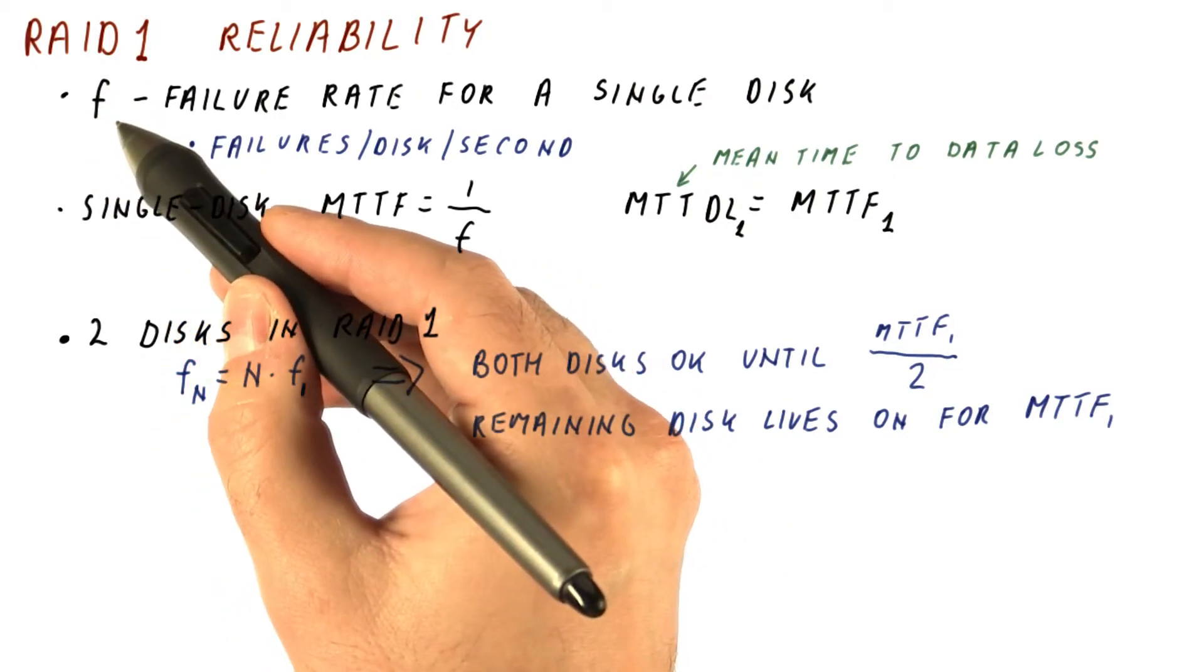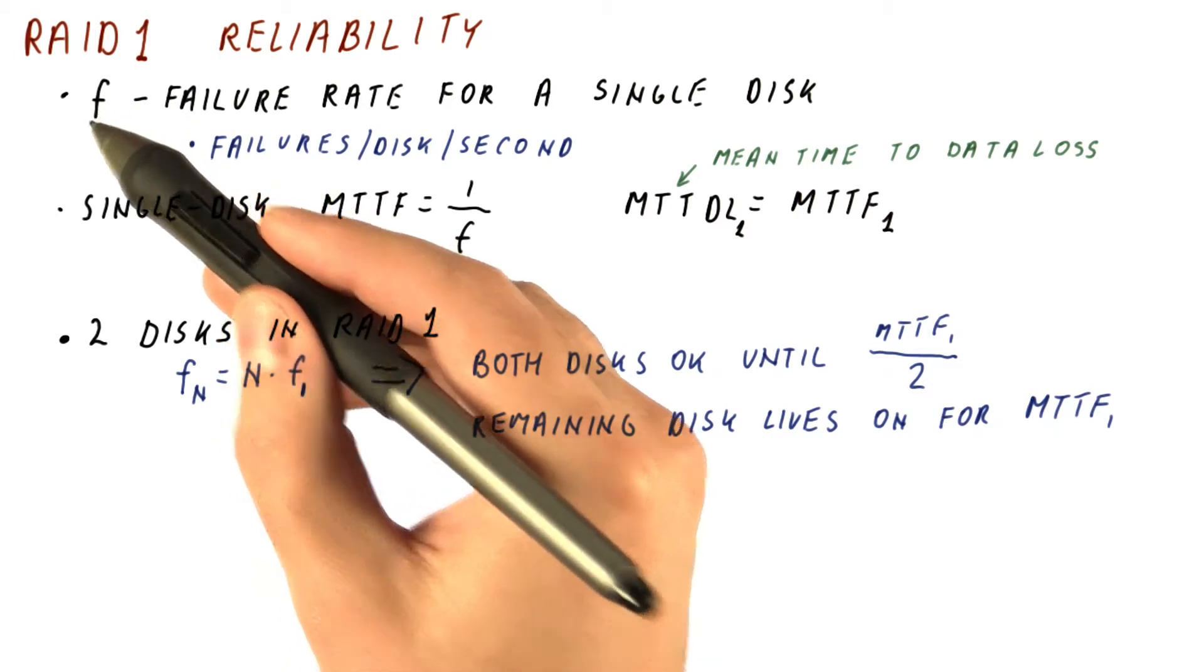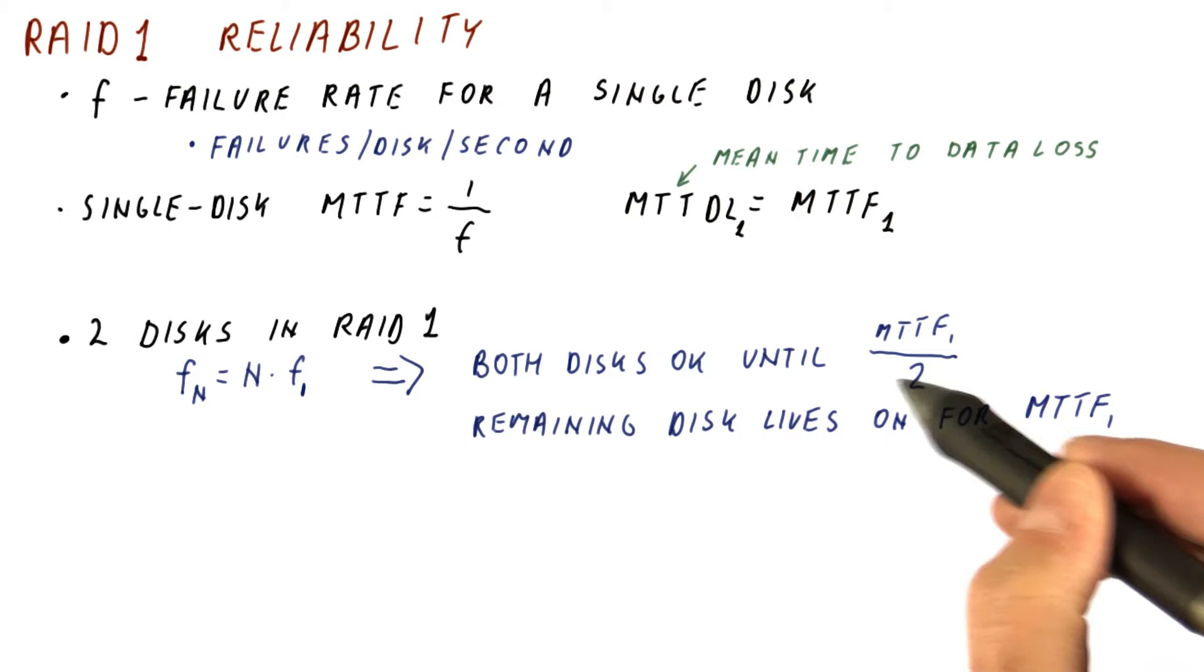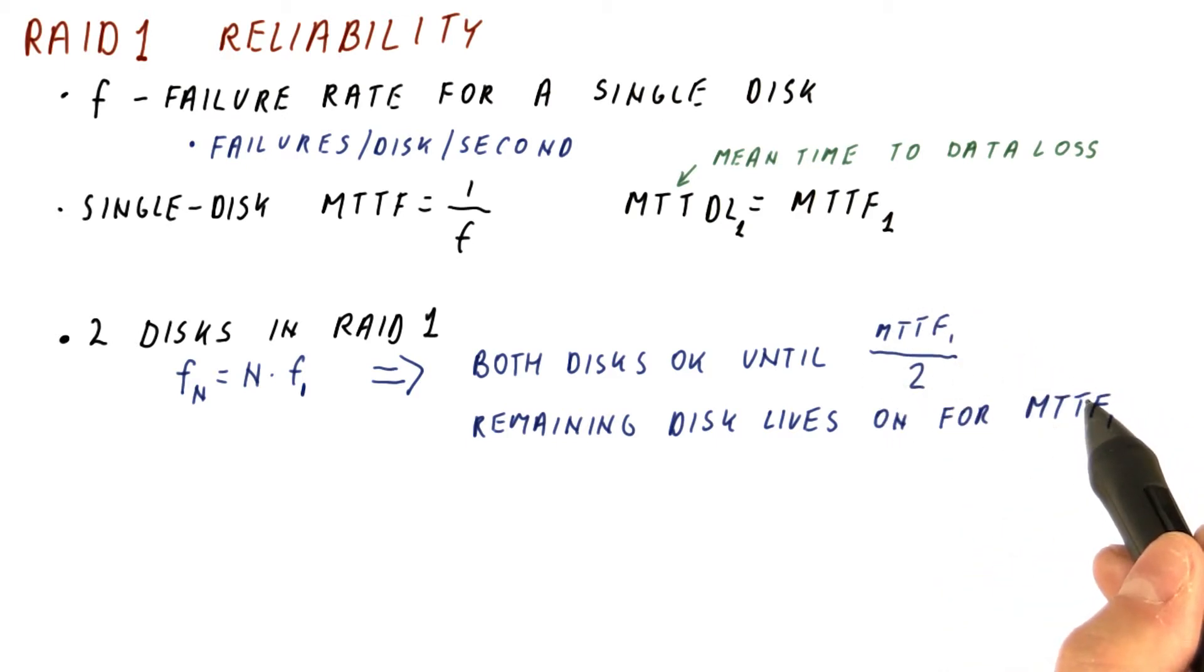The only thing that changes the failure rate is if the disk fails. So if we had two disks and both work, this is the expected time of them surviving. And then if we're down to one disk that works, at the time when we have a single working disk, this is the MTTF that we can expect.